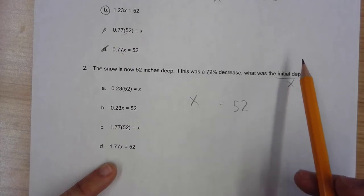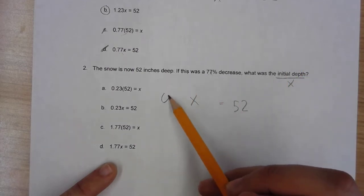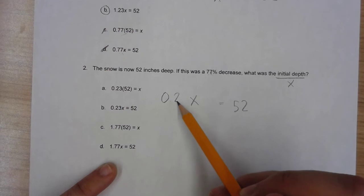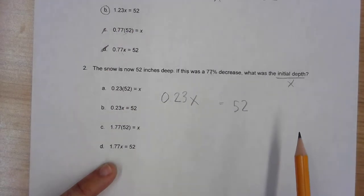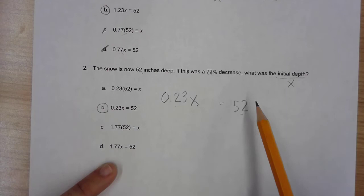We don't know the initial depth, so it's X. If this was a 77% decrease of the initial depth, then we can simply know if it's 77% less, then we're left with 23%. 100% minus 77%, we're at 23% of X. That's what's left now, and we know that now we have 52 inches. Again, you should have already realized which one of these answer choices matches that situation - that's B.